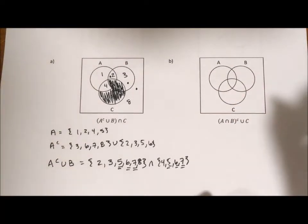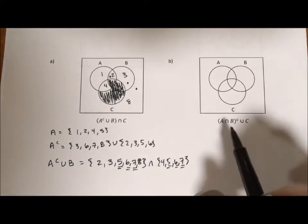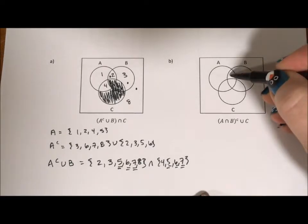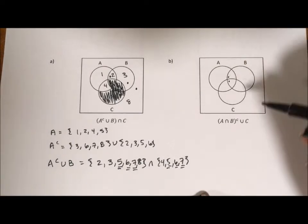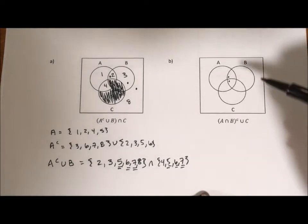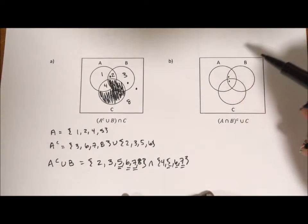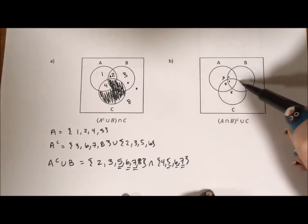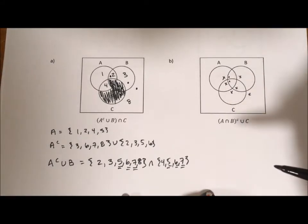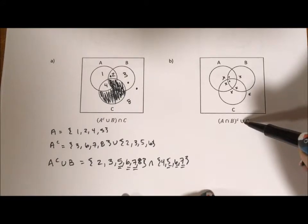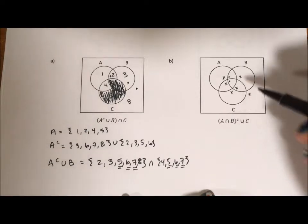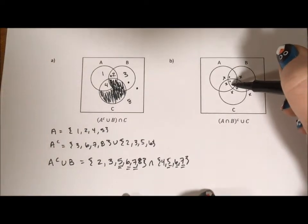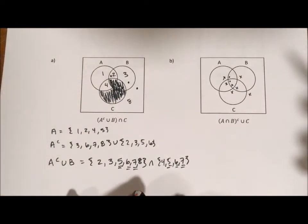So for my next example, if we start with the intersection of A and B, that's going to be this section and this section, but we want the complement. And the complement is going to be everything but that. So it's going to be here, here, here, here, here, here, and out here. Union means adding things together. So we need to add in everything that's C, which is also going to be this bit right here.